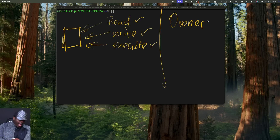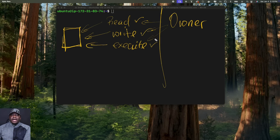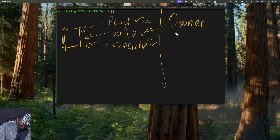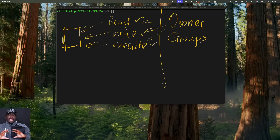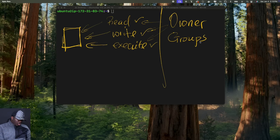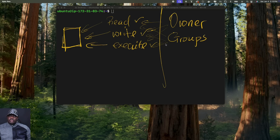The owner would have the permission to read this file, to write on this file, or to execute this file as a program. The second category of people who have access to this file are groups. A group is simply a collection of people that share the same permissions. Groups can also have access to these files — they would have the ability to read, write, and execute this file as well.